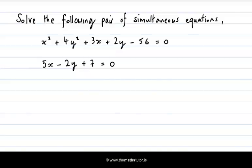You see here two equations. In the first equation we see that the highest power is 2. That makes it a quadratic. In the second equation we see that the highest power is 1. So that makes it a linear equation. So here we have a pair of simultaneous equations where one of them is quadratic and one of them is linear.